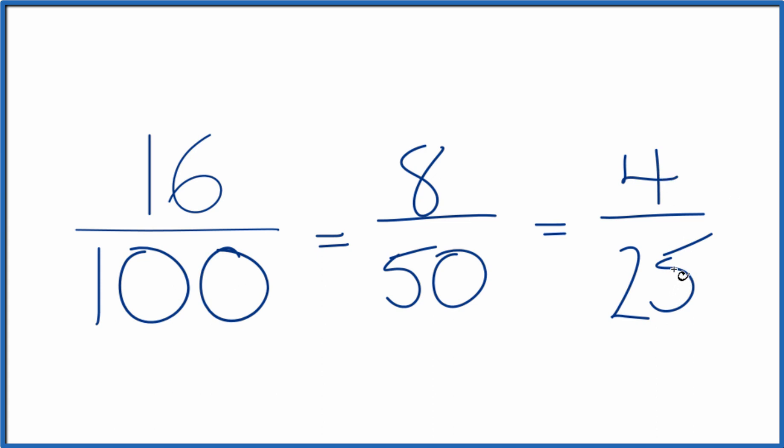And you can't simplify or reduce that any further. So when we're asked to simplify the fraction 16 over 100, we can say the lowest terms, the simplest form is 4 twenty-fifths. These are all equivalent.